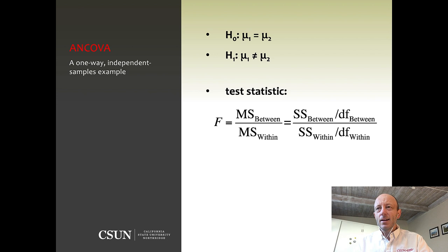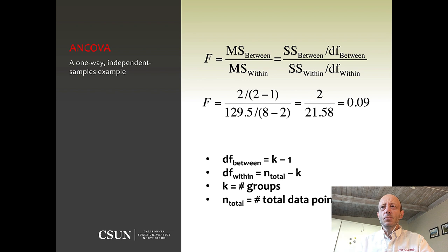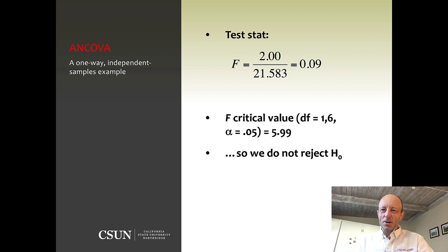Here's the setup for the ANOVA — I'm just going to fly through this. This is your sum of squares between and sum of squares within, typical stuff for independent samples in a one-way ANOVA. Refer back to the one-way ANOVA video for details. We end up with an F value of 0.09, which is very small. We're not seeing a difference between therapy types; we're not rejecting the null hypothesis.